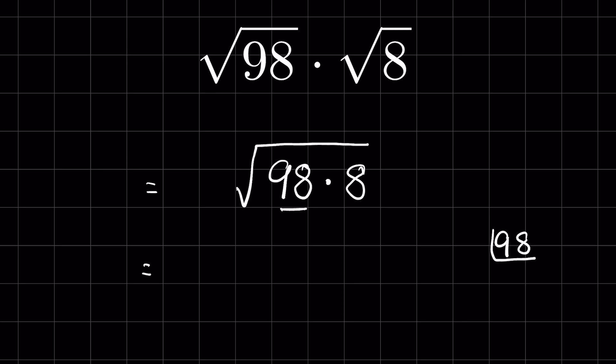Now we can break down 98 into prime factors. 98 is divisible by 2 because it ends in an even number, and any number with an even digit at its unit place is divisible by 2. So 2 times 49 is 98. 49 is the square of 7, so 7 times 7 is 49. Since 7 and 2 are both prime numbers, the prime factors of 98 are 2 times 7 squared.